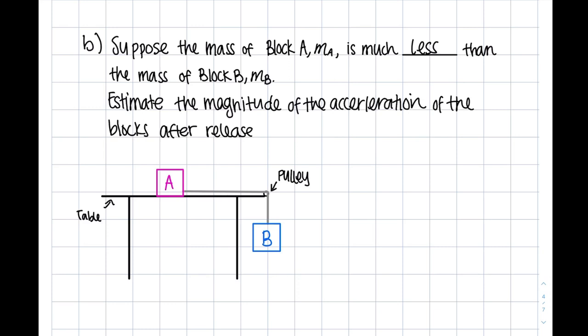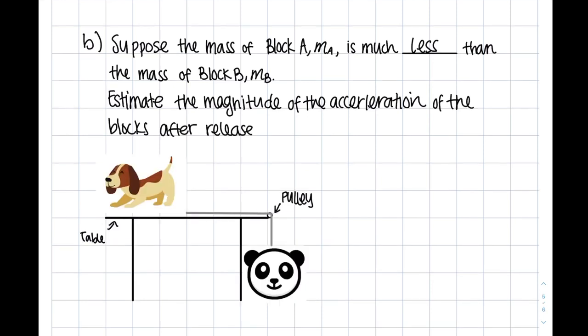Okay, so question B switches it up a bit. It's asking for the magnitude of acceleration when the block A mass, so MA, is much less than MB. So basically, we're switching panda and puppy now. Although it might be tempting to say, since the panda will end up speeding up this whole process, acceleration is growing enormously, let's take a look at this again.